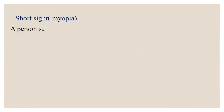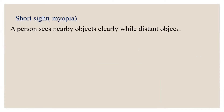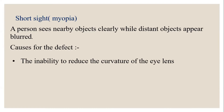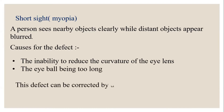Short sight, or myopia: a person sees nearby objects clearly while distant objects appear blurred. The causes are the inability to reduce the curvature of the eye lens and the eyeball being too long. This defect can be corrected by using a concave meniscus lens.